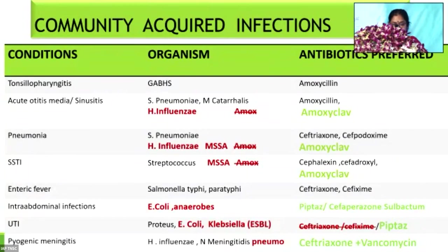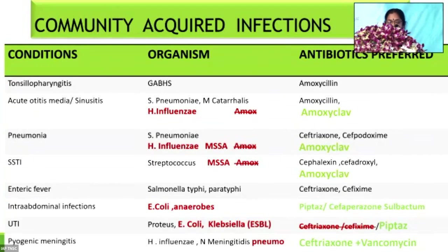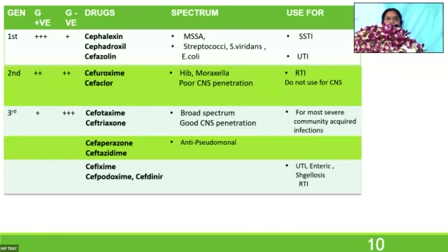For infections below the diaphragm — intra-abdominal infections or ESBL-producing UTI where E. coli and Klebsiella are present — ceftriaxone may not be useful. You will have to resort to piperacillin-tazobactam or cefoperazone-sulbactam. In pyogenic meningitis with penicillin-resistant pneumococcus, you resort to ceftriaxone plus vancomycin. We use combination therapy in community-acquired infections when we know the organism. Ceftriaxone is used very widely because it is a broad-spectrum antibiotic with excellent CNS penetration, and it's used in most severe community-acquired infections.